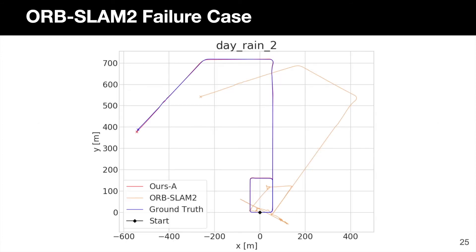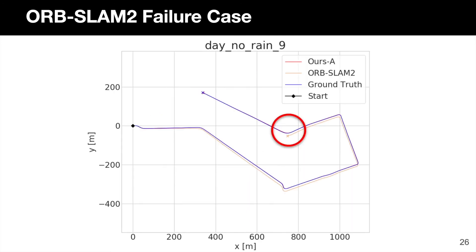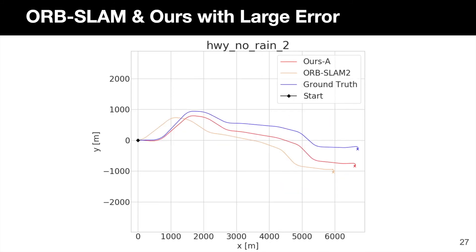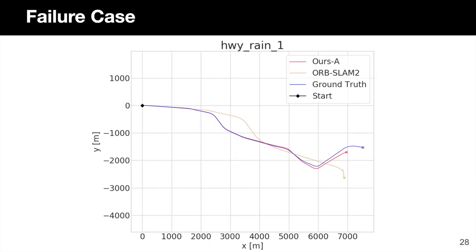Next, we show some qualitative results. The ground truth is shown in blue, while Orb SLAM is shown in light brown. Our AMV SLAM system is shown in red, and all trajectories start at the black diamond. We first show qualitative trajectories where Orb SLAM with stereo cameras has large tracking errors or has ended early, while our method with all cameras is able to localize almost perfectly — the red AMV SLAM trajectory overlaps quite well with the ground truth. We also show a challenging highway driving scenario where both Orb SLAM 2 and our system have large tracking errors, and another sequence where our method ended early while Orb SLAM 2 finishes, albeit with larger errors.